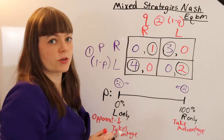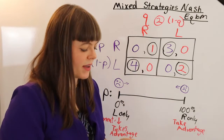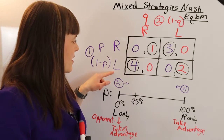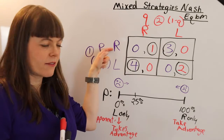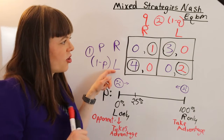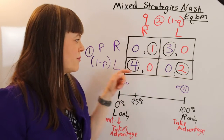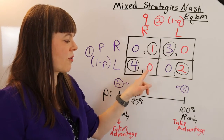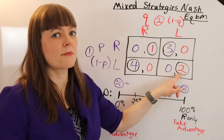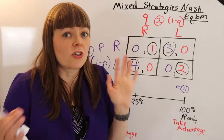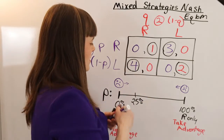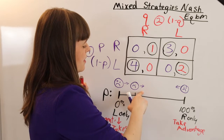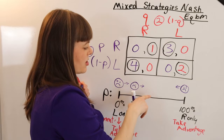The next guess might be p equal to 25%. What you'll find is that if you go right 25% and left 75% of the time, your opponent's best response is to always go left — because most of the time you're on the bottom row, and they get more by choosing left. Going left 75% of the time makes that better than any other choice. You're still not happy because they're always going left, and you wish you'd increased the probability of going right.